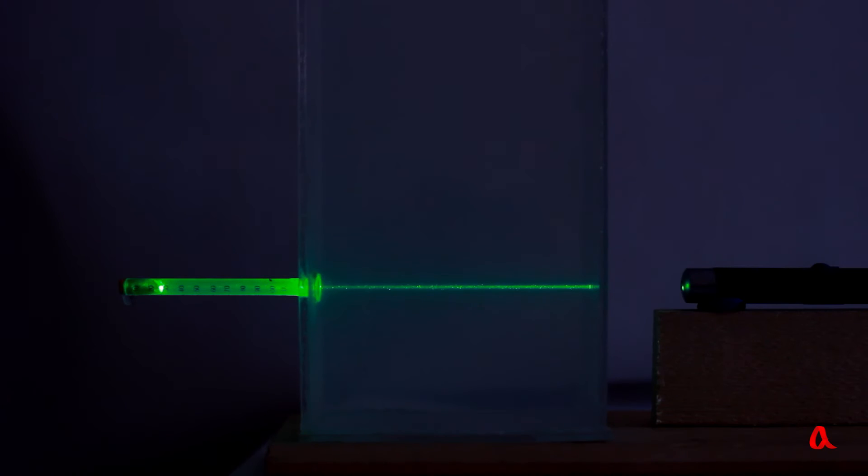We inserted a thin tube into a vessel with transparent walls and poured water into it. A laser beam goes through the vessel's wall and through the tube. Let's uncork the vessel.